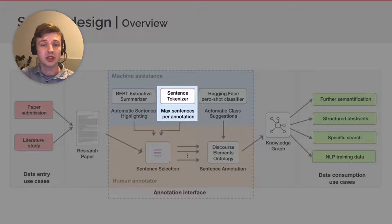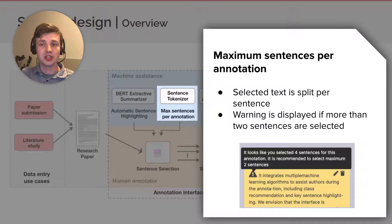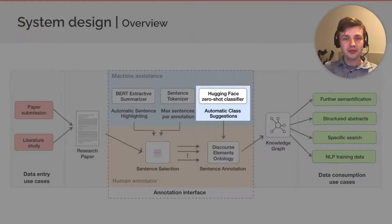Next, the maximum sentences per annotation. This component counts the amount of selected sentences for a single annotation. A warning is displayed if more than two sentences are selected. This encourages users to only select key sentences and not to annotate whole paragraphs. Also, this warning is only a suggestion. It's still possible to annotate more than two sentences.